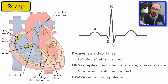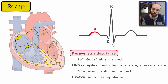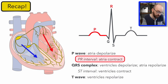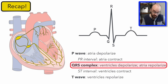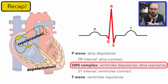All of this electrical conduction produces the ECG — the electrocardiogram. The P wave is where the atria depolarize. The PR interval is where the atria contract, pushing blood from the right atrium to the right ventricle and from the left atrium to the left ventricle. The QRS complex is where the ventricles depolarize and the atria repolarize.